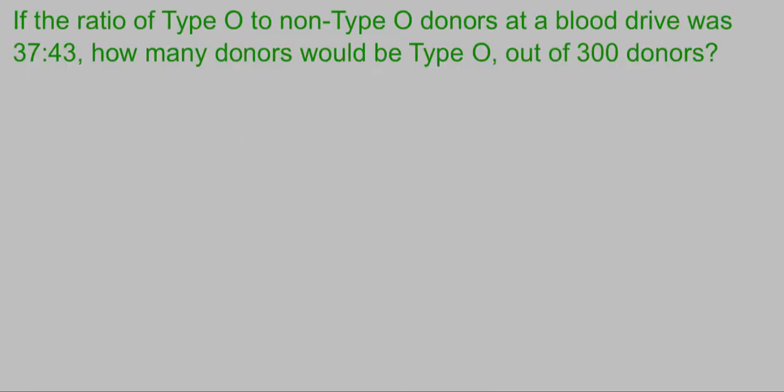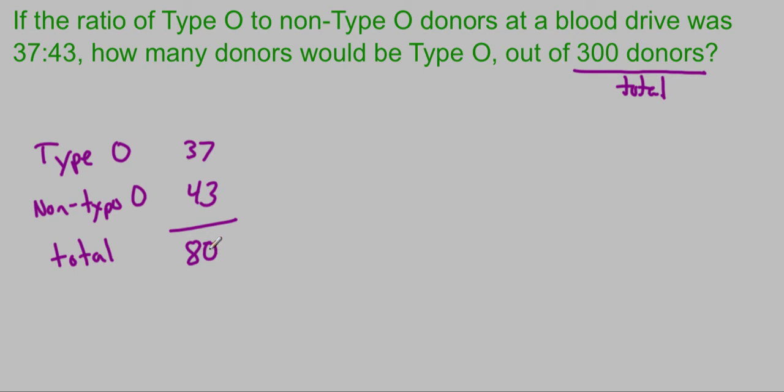Hopefully got a pretty good feel for it so far. Let's try one last one. This one's a little bit trickier. That's why I wanted to do one in the video here so you had an example. It said if the ratio of type O to non-type O donors at a blood drive was 37 to 43. So I'm going to start with I've got type O. That was my 37. I've got non-type O. These are just different blood types. You got to match up your blood type when you're donating blood to somebody. We want to know how many donors would be type O out of 300 donors. Well we know something about type O and non-type O, but 300 donors sounds like that's the total number of people. So we need to add one extra category of total. Well, if there's 37 people that have type O, 43 that have non-type O, that gives us a total of 80 people in total. So we had to go find that extra piece of information.